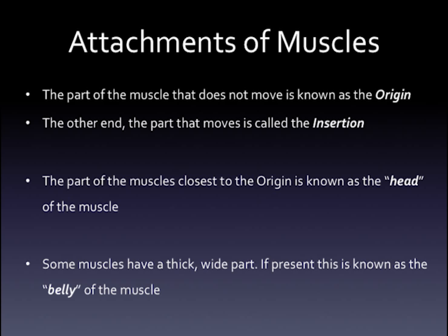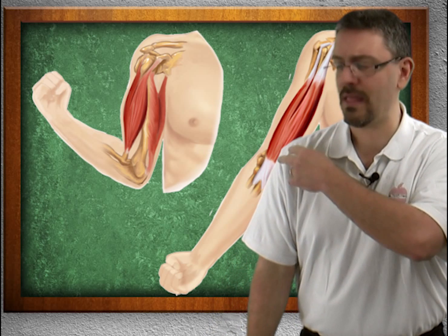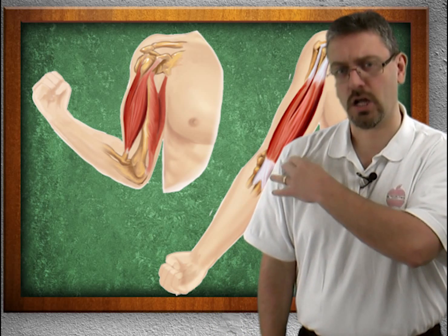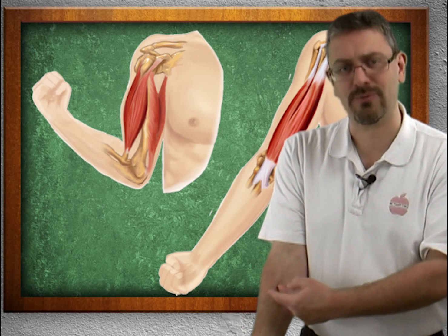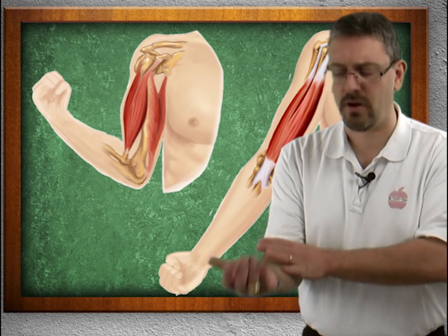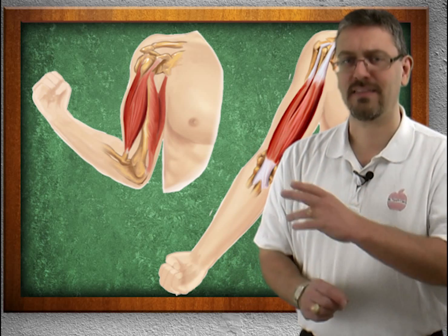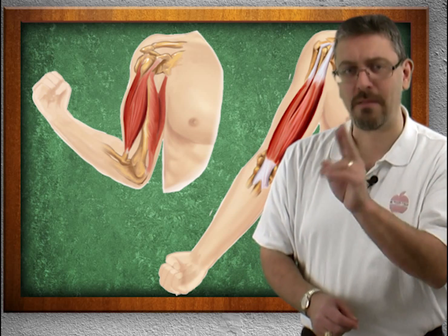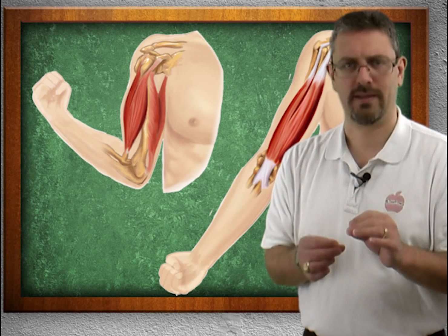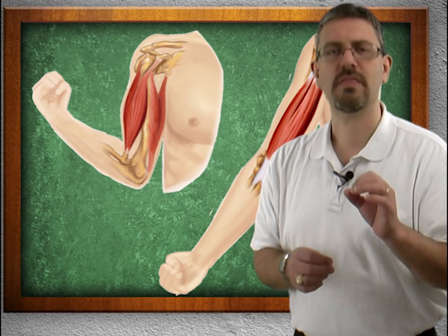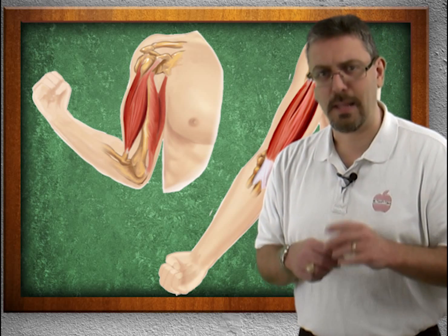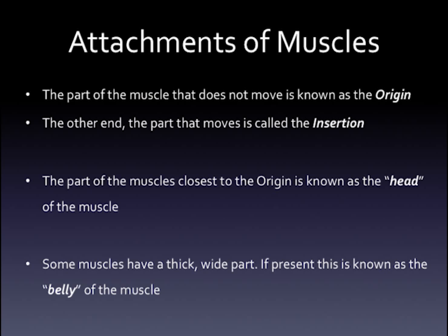Insertion is the part of the muscle that moves the most. For example, the biceps brachii — the origin is up here, the insertion is down here. This is the part that moves when the muscle contracts. I'm not saying that the origin won't move, but what I am saying is that the insertion point of the muscle moves the most. The belly of the muscle is the widest, thickest part of that muscle.